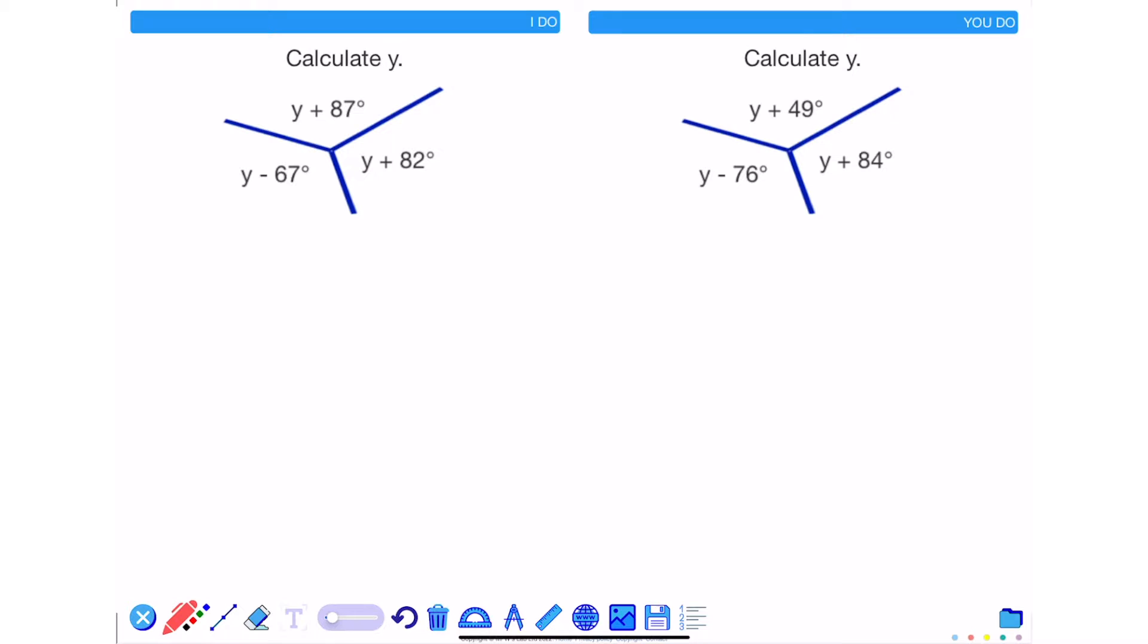In this video we are going to take a look at how we can problem solve using the angles around a point fact. Looking at the example on the left hand side, we know that the angles around a point add up to 360 degrees. So the sum of y + 87 plus y + 82 plus y - 67 has to equal 360 degrees.